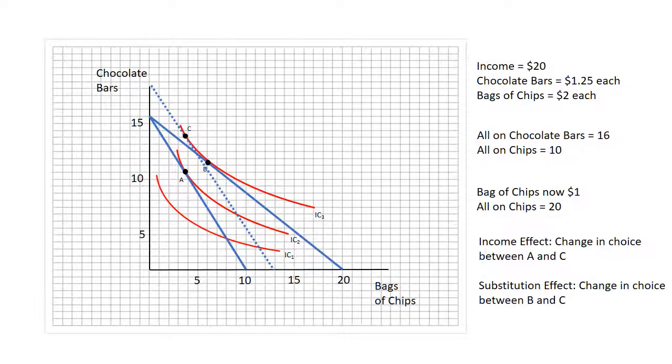The substitution effect, going from C to B, is to decrease the consumption of chocolate bars from around 13 down to 11 and a half, and to increase the consumption of bags of chips from around four to around seven.